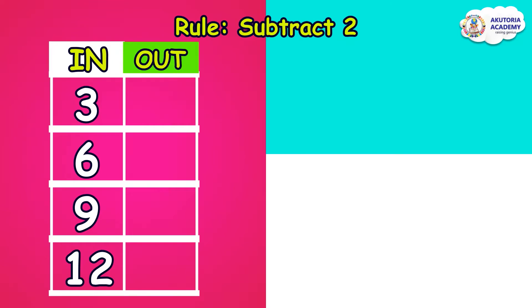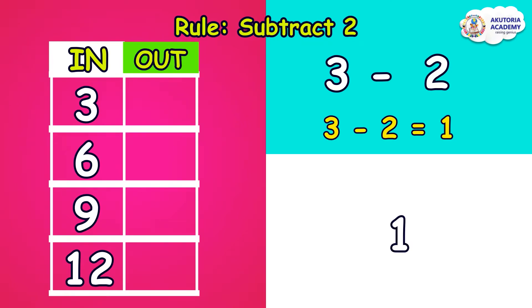We'll subtract two from three, six, nine, and twelve, and write our answers in the "out" column on the right. Our first number is three. The rule says subtract two, so three minus two equals one. We place our answer, one, in the first box under the out column.